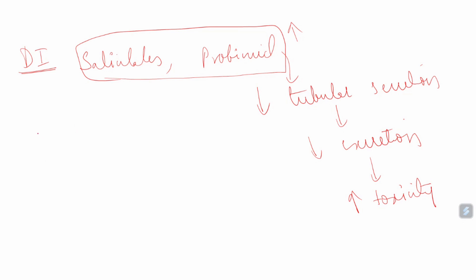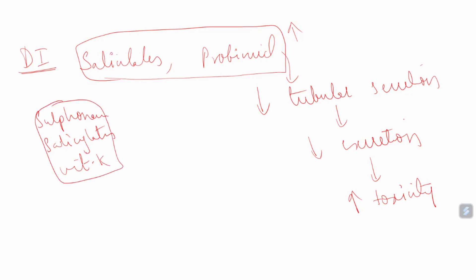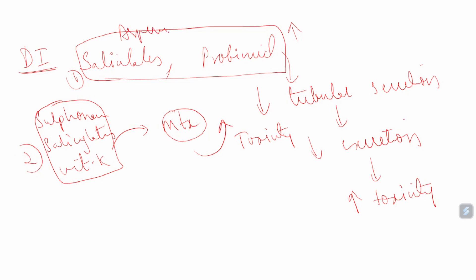Second drug interaction: drugs like sulfonamides, salicylates, vitamin K, and sulfonylureas have high protein-binding capacity. Methotrexate travels by binding to plasma proteins. When bound to plasma protein, it does not show action — only the free form in plasma shows action. When these highly protein-bound drugs are given alongside methotrexate, they displace methotrexate from plasma proteins, increasing the free form of methotrexate, which potentiates toxicity.